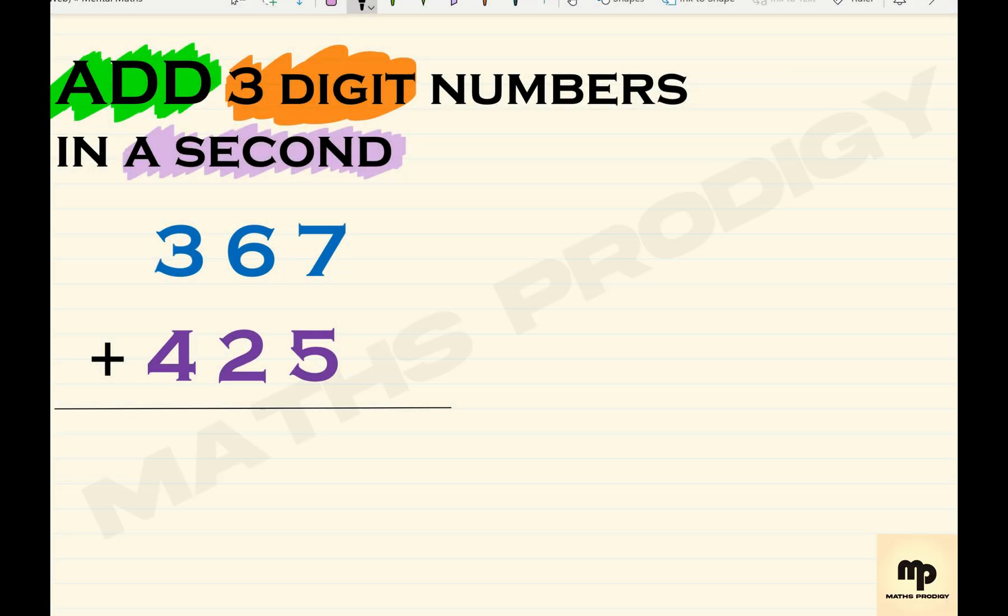In this video we will add three-digit numbers in a second. There are two different ways, but I'll go for the first way which is quite easier. Take the beginning number, that is 425, you have to add 367.